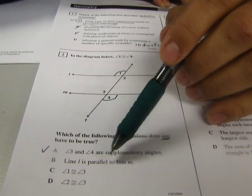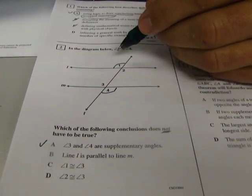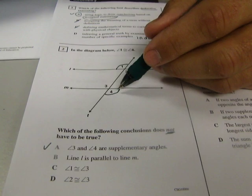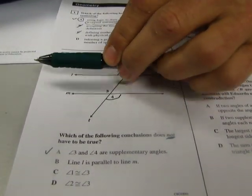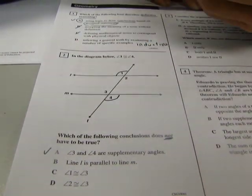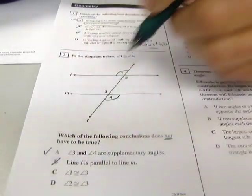Line L is parallel to line M. Well, let's look at this. If one and four are congruent and they are alternate exterior angles, when alternate exterior angles are congruent, the lines are parallel. So that does have to be true, which means that cannot be the answer.